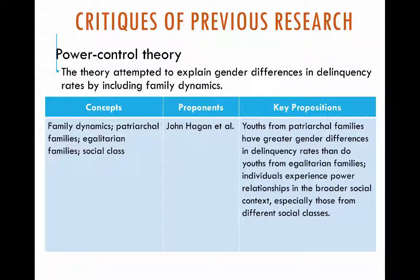Power control theory comes from Hagen, who incorporated conflict theory and social control theory to understand feminist dynamics. He argued that youths from more patriarchal families — where the mother had lower status than the father — had greater gender differences in delinquency rates compared to youths from more egalitarian homes. If you have more of a power dynamic between men and women in your household, you'll be more restrictive of your daughter but less restrictive of your son, creating gender differences in delinquency rates.